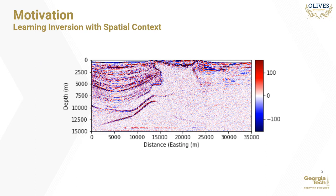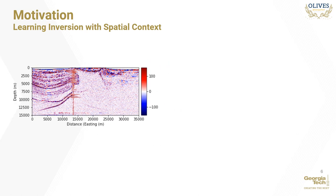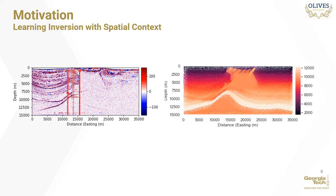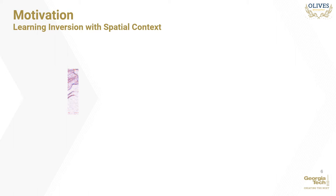Coming back to our problem of learning inversion, say we are given a seismic section and would like to invert the seismic trace shown in the figure to the corresponding rock property trace. Using only traditional deep learning sequence models that operate on one-dimensional sequences, we expect to obtain noisy estimations of acoustic impedance profiles, because the network does not take into account the spatial context information from the neighborhood of each trace. We hypothesize that incorporating this information would lead to much smoother, accurate, and robust estimations. We therefore propose using a seismic image patch centered at the position of the log we are trying to estimate as input to the framework — full depth of the seismic section and a few samples wide to include neighboring seismic traces.